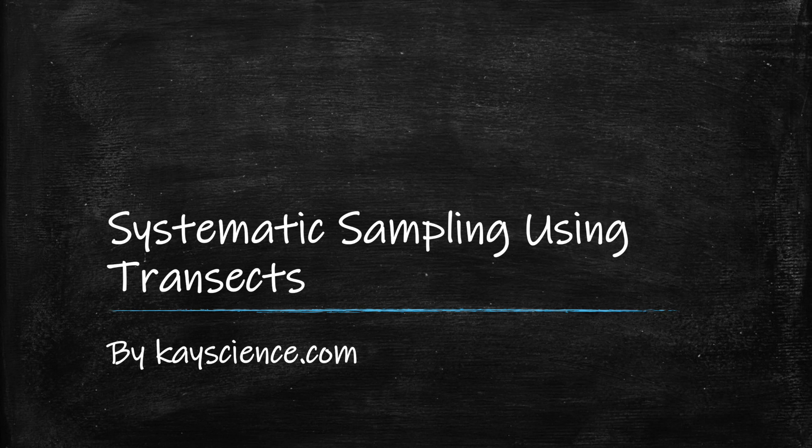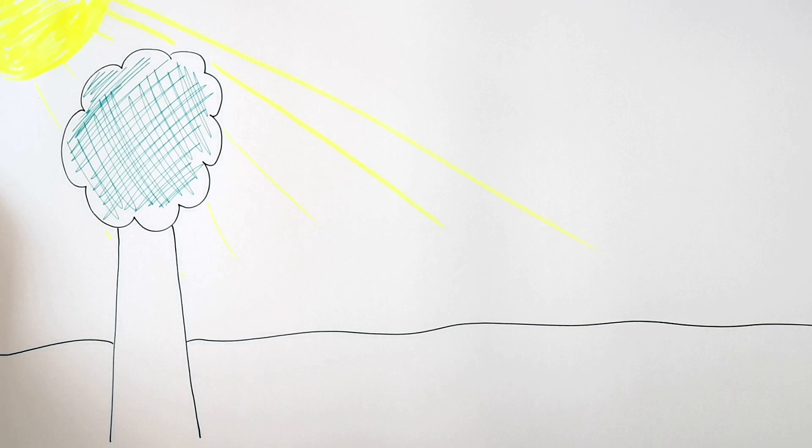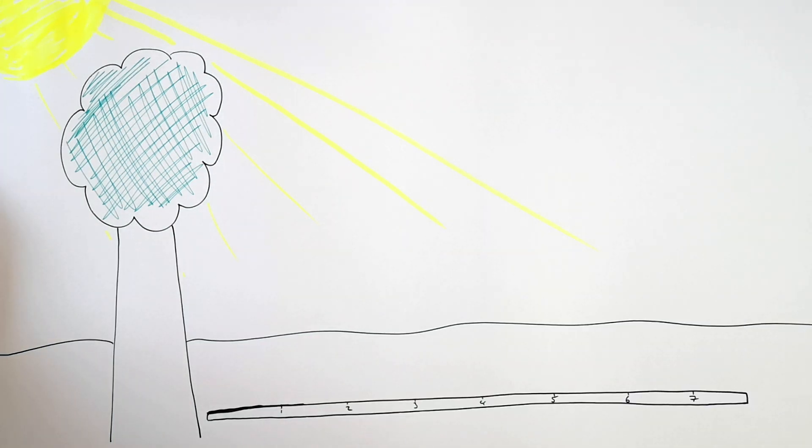Systematic Sampling Using Transects. We're going to investigate the effect of light intensity on the distribution of plants away from the tree. So you firstly lay the belt transect away from the tree. The belt transect in this case is a measuring tape.